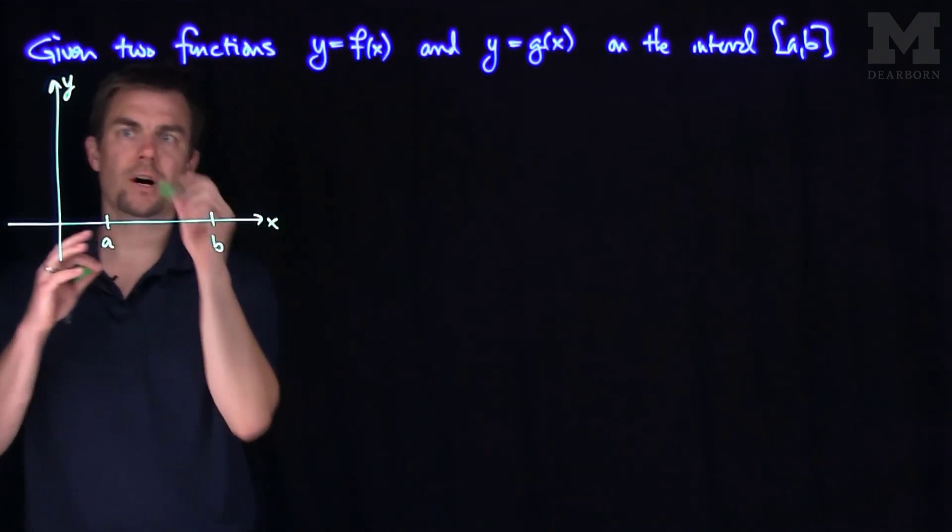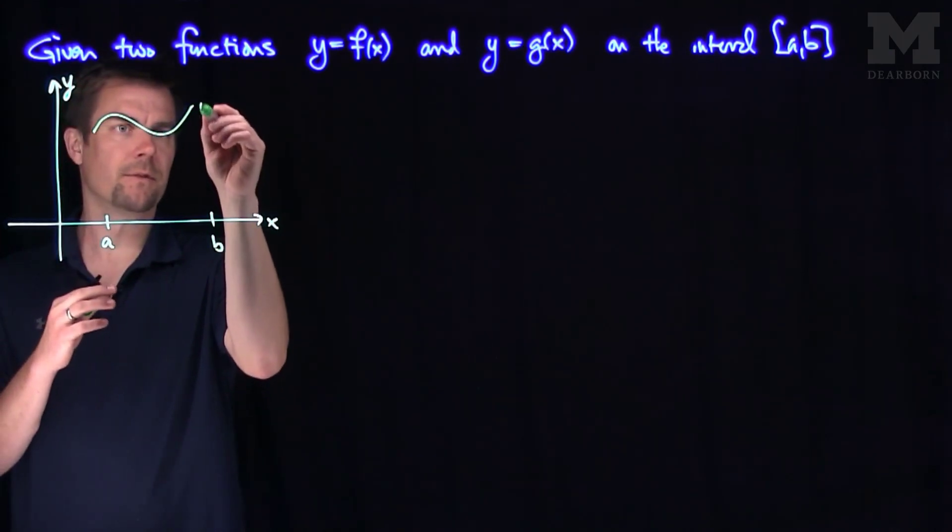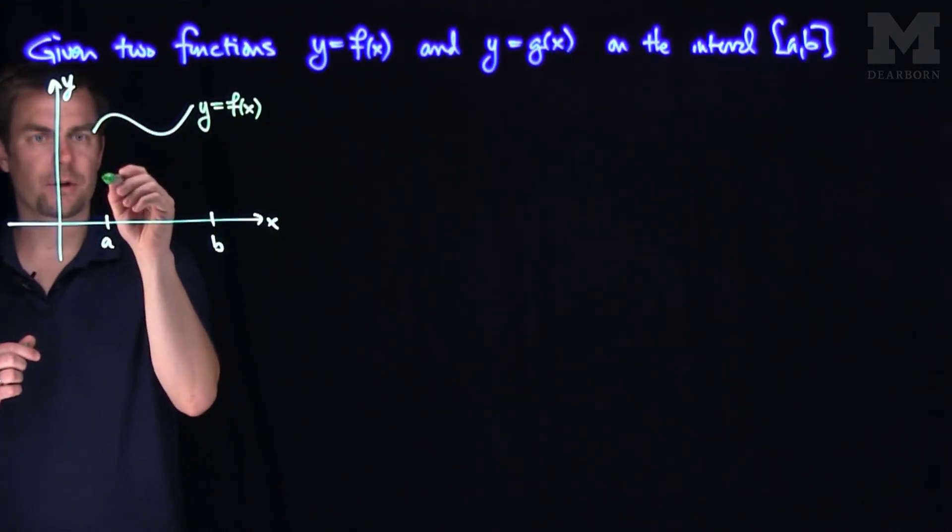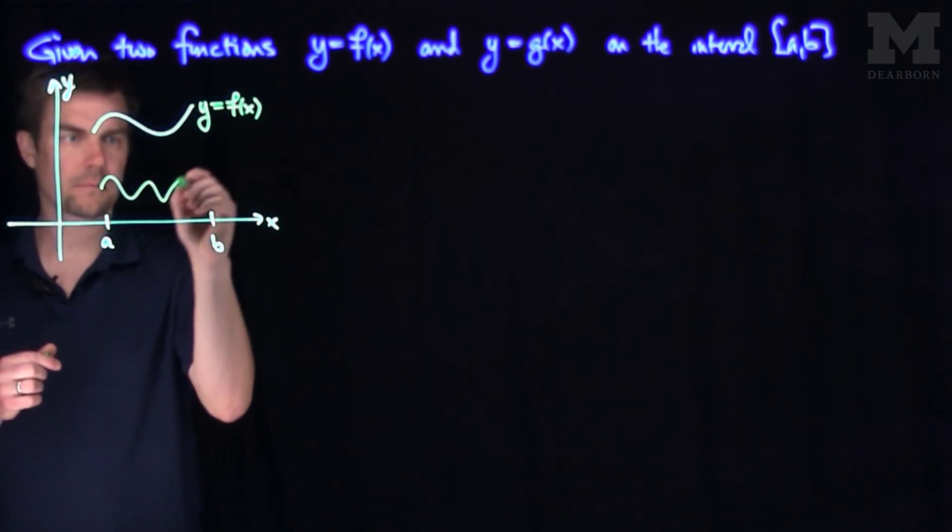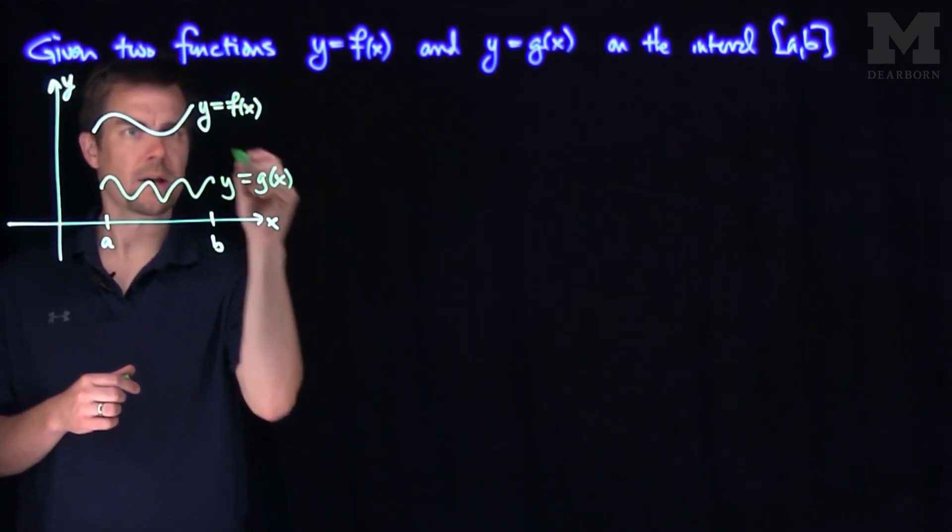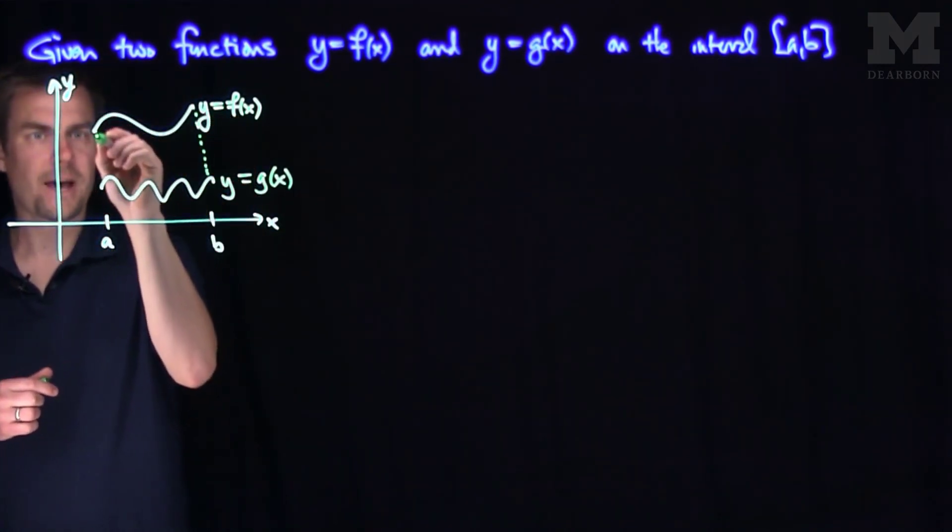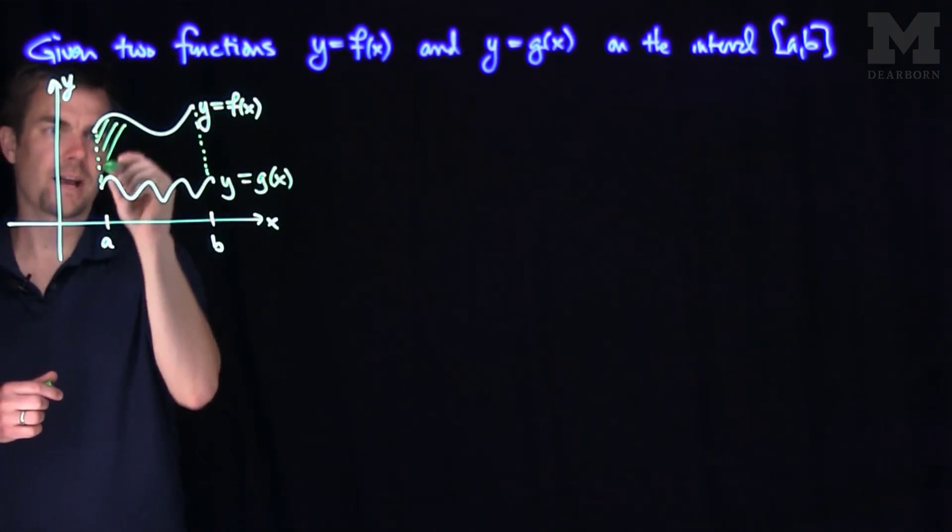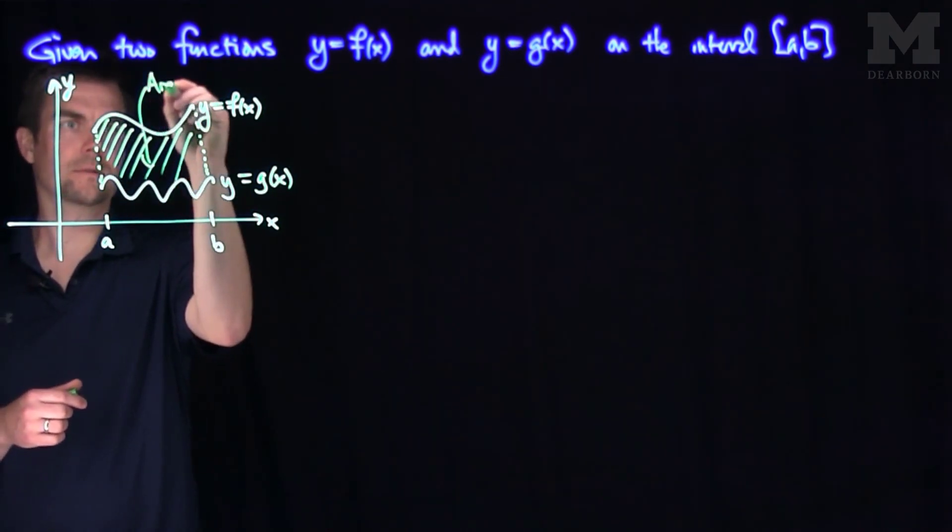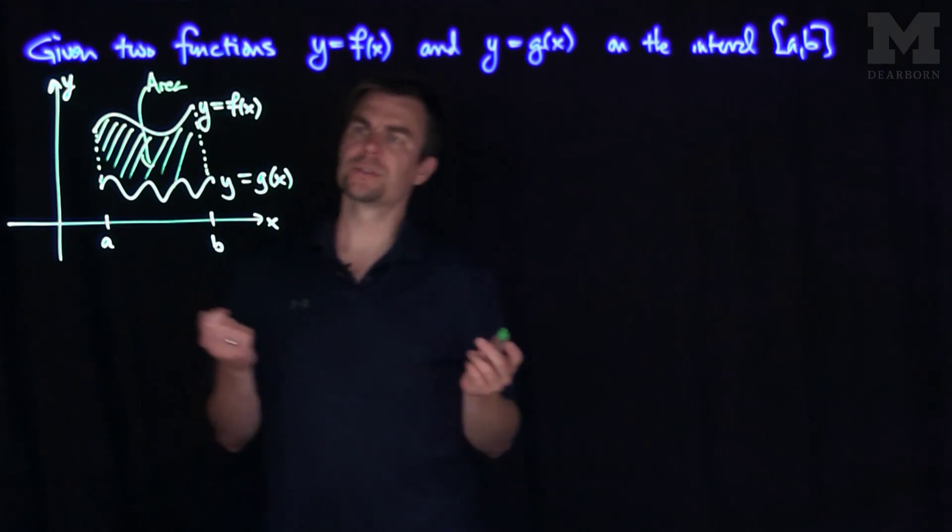And for simplicity, I'm going to draw the function f to be the function on top, that's y equals f of x. And then there's a function on the bottom, that's y equals g of x, and I'm after the question of finding this area. That's the area that I want.